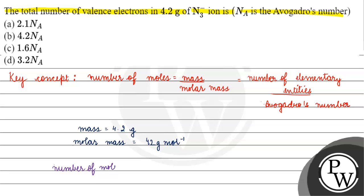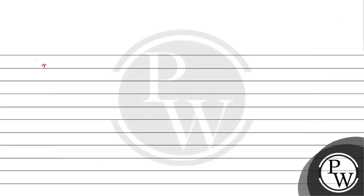Number of moles of azide ion will be equals to number of moles 0.1 mole into Avogadro's number.